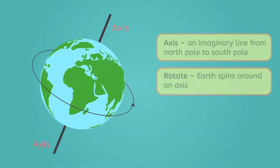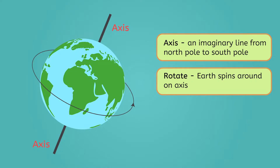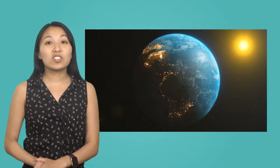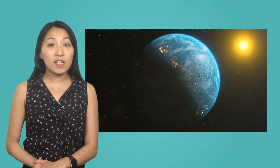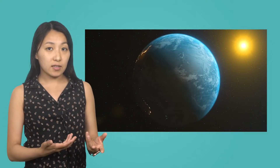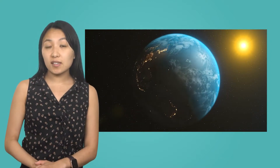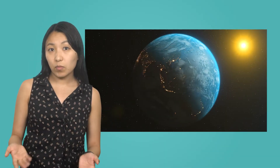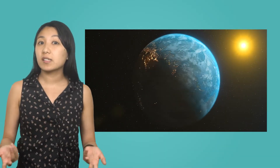Our Earth rotates on its axis, an imaginary line that runs from the North Pole to the South Pole. Rotate means the Earth spins around this axis, much like a spinning top or a basketball spinning on a finger. This rotation causes different parts of Earth to face the Sun at different times, resulting in day and night. The side facing the Sun experiences daytime while the side facing away experiences nighttime.